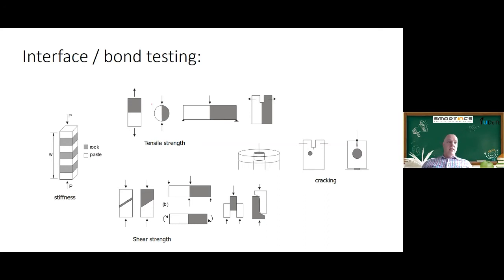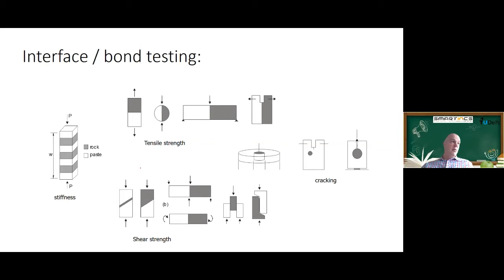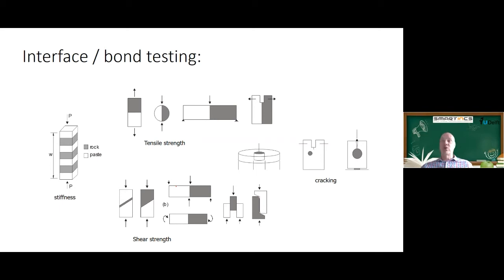Interfaces are also important in our materials. They exist between your aggregates and matrix, but also between repair material and existing concrete. They are loaded in different ways and determine what happens with the structure. It's important to look at how to test these interfaces, what kind of load is important, and what stress they experience. There's a lot of literature about it but not really a consensus on what to do exactly — this will also be discussed after the break.